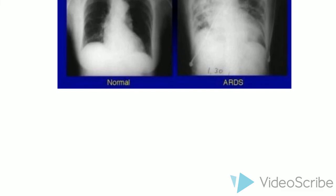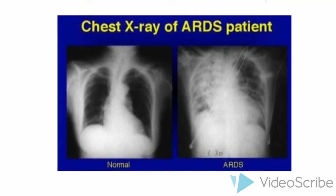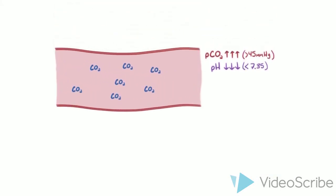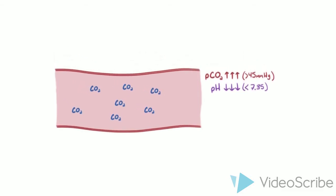These observations should prompt investigations including imaging. Bilateral infiltrates are diagnostic for ARDS, and ABGs will typically show respiratory acidosis.